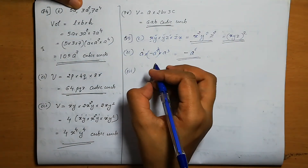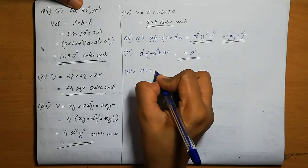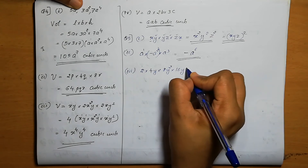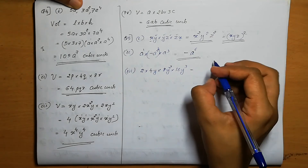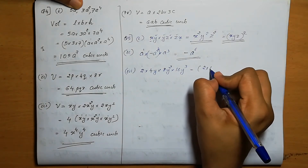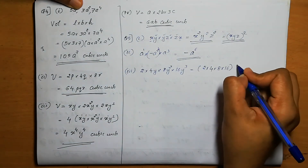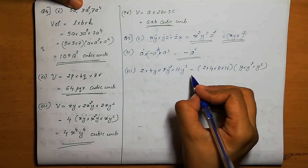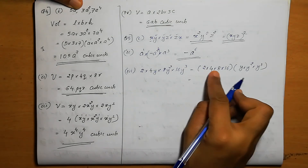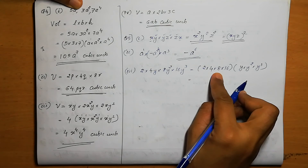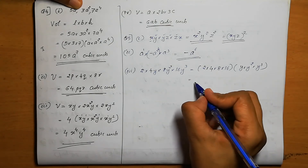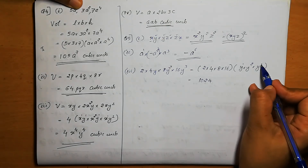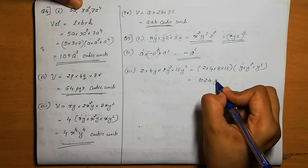Third one: 2 into 4y into 8y square into 16y cube. Numbers together: 2 into 4 into 8 into 16. 2 into 4 is 8, 8 into 8 is 64, 64 into 16 is 1024. Variables: y into y square into y cube — powers add: 1 plus 2 plus 3 is 6, giving y power 6. Answer is 1024y power 6.